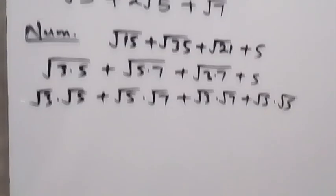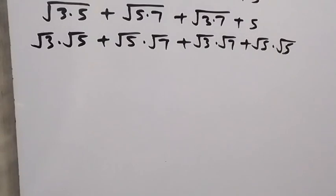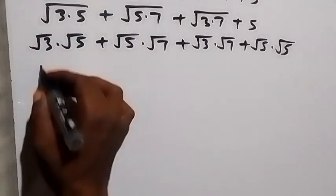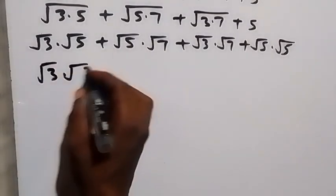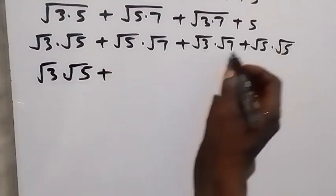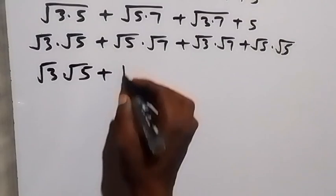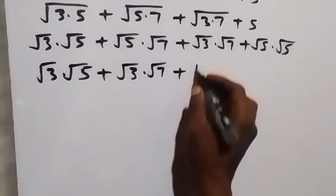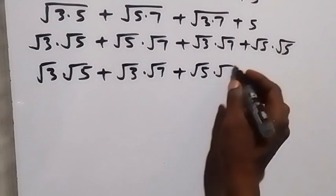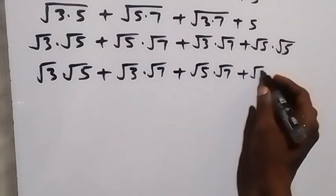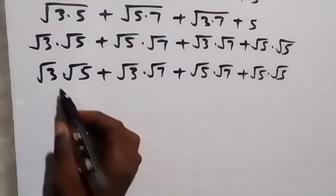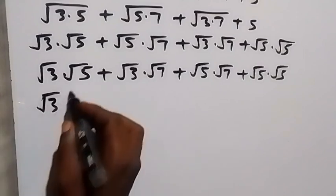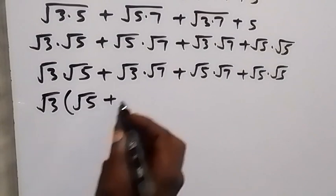We can rearrange this. When we rearrange and write the next step, we have √3·√5 then plus √3·√7 — we separate these together — then plus √5·√7. Grouping this into two: what is common in the first group is √3. Taking √3 out, we have √5 left here, then plus √7 left here.